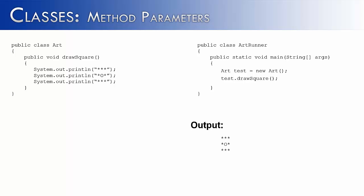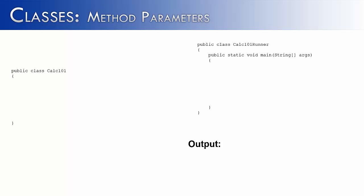In this video, what I want to look at is what if we add a parameter to a method. In order to do that, I've created two classes: Calc101, as in Calculator 101, and Calc101Runner. I'm going to create two integer values, n1 and n2 — the first assigned to 20, the second assigned to 10. Then I'm going to construct an object of the Calc101 class, and that object reference is going to be math.